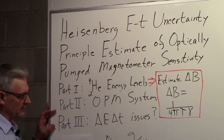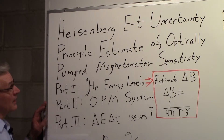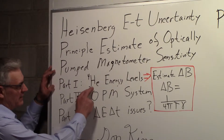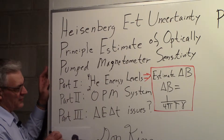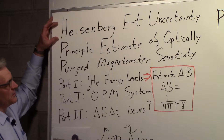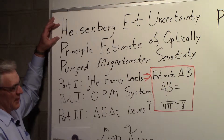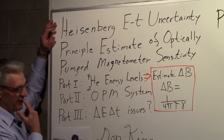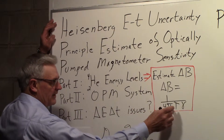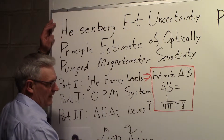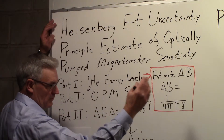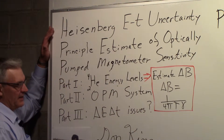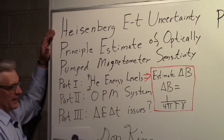This is part three. In part one we began by talking about helium-4 energy levels and used the Heisenberg energy-time uncertainty principle to come up with an estimate for magnetometer sensitivity, arriving at 1 over 4π times the relaxation time associated with those energy levels, and γ the gyromagnetic ratio for any species.